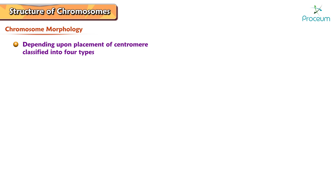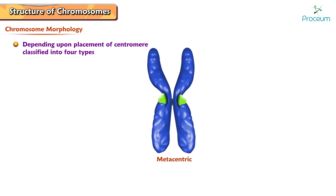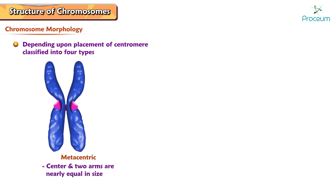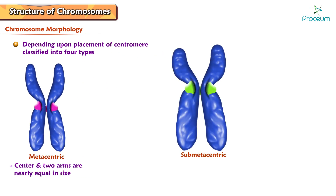Depending on the placement of the centromere, chromosomes are classified into four types. Metacentric chromosomes have the centromere almost in the center, making the two arms nearly equal in size. Submetacentric chromosomes have the centromere located between the midpoint and the end of the chromosome.